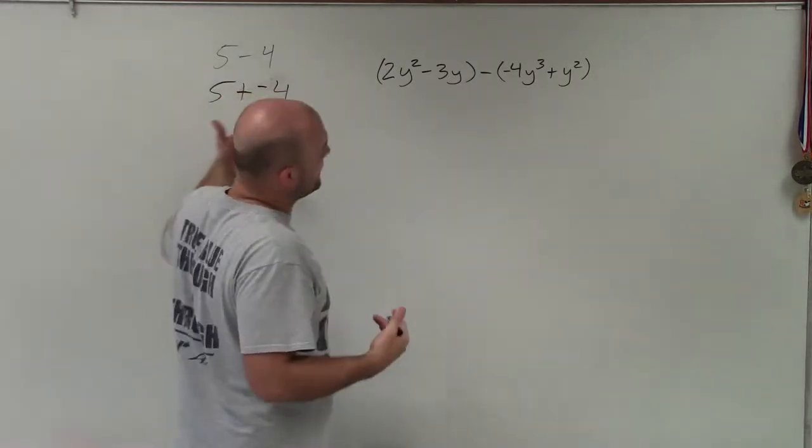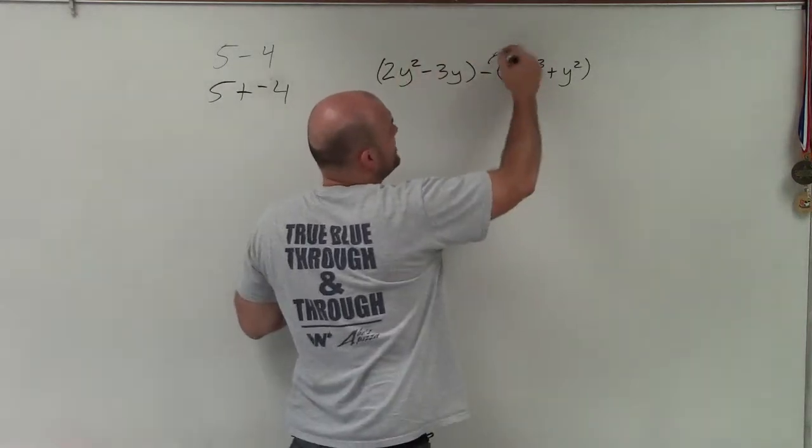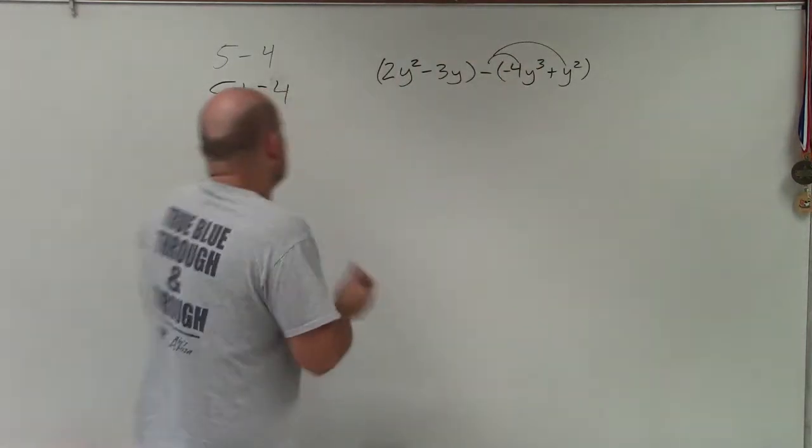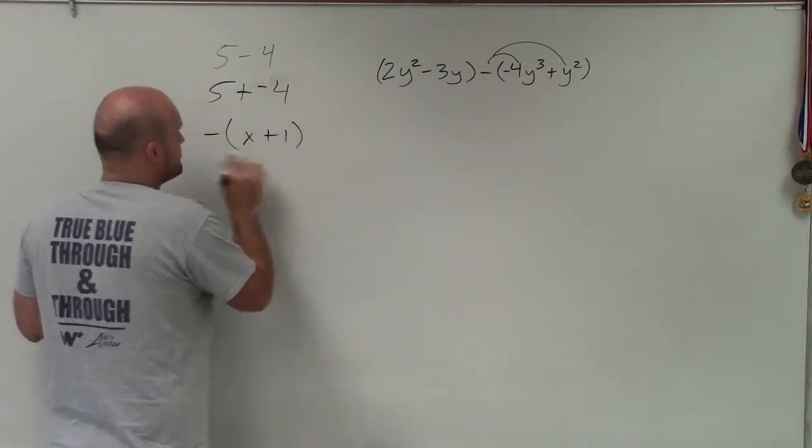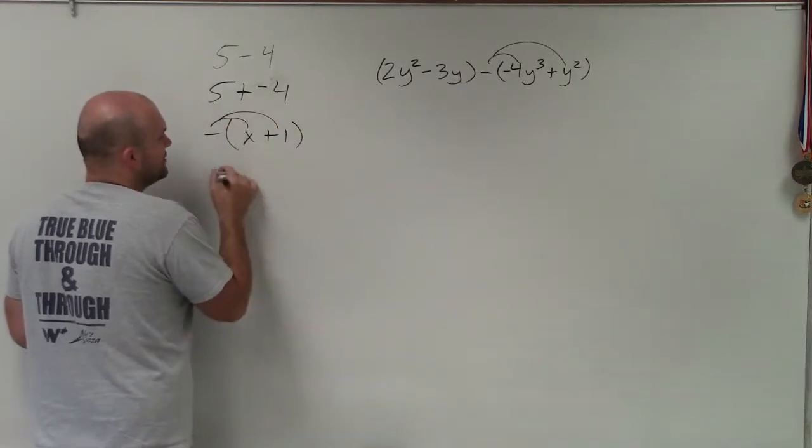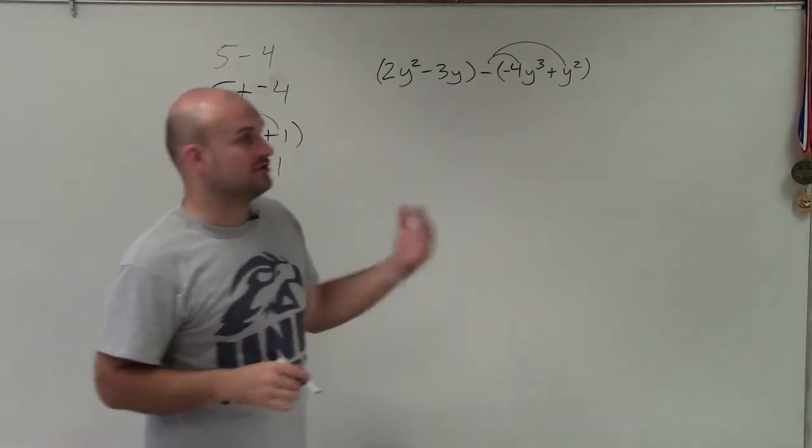Now, when doing that, what I have to do is make sure I distribute this negative to each and every one of my terms, right? Because basically, this is a negative outside of a parentheses. So when you have a negative outside of a parentheses, you have to apply your distributive property to all of the terms inside the parentheses.